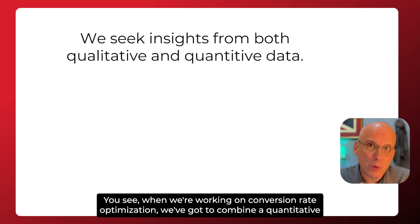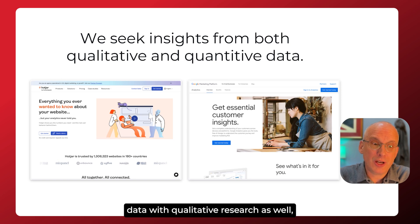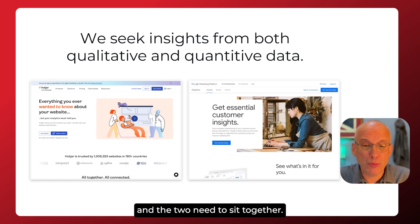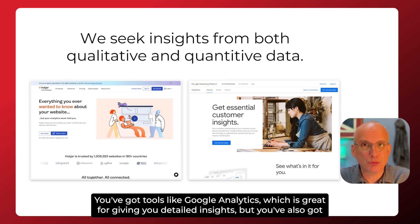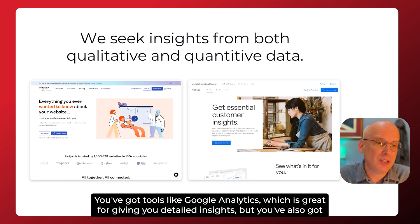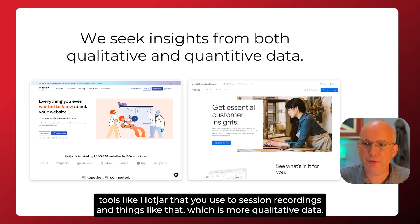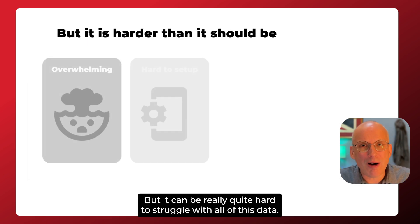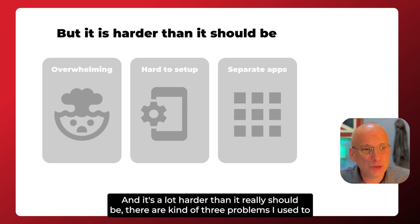When we're working on conversion rate optimization, we've got to combine quantitative data with qualitative research, and the two need to sit together. And traditionally, you've been a little bit torn in that area. You've got tools like Google Analytics, which is great for giving you detailed insights, but you've also got tools like Hotjar that you use for session recordings and things like that, which is more qualitative data. But it can be really quite hard to wrangle all of this data, and it's a lot harder than it really should be.